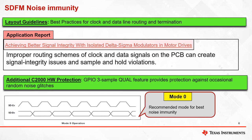Improper routing and layout of SDFM clock and data traces on PCB can create signal integrity issues and sample-and-hold violations. TI provides an application report which discusses the best practices for clock and data line routing and termination when using isolated Sigma Delta modulators. Devices supporting Type 0 SDFM also provide additional hardware protection against occasional random noise glitches using the GPIO 3-sample feature. TI also highly recommends using mode 0 as it provides the best filter performance in noisy conditions.